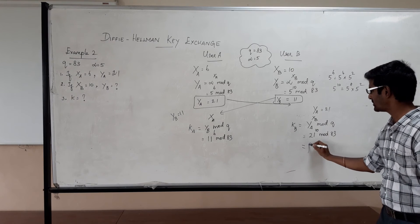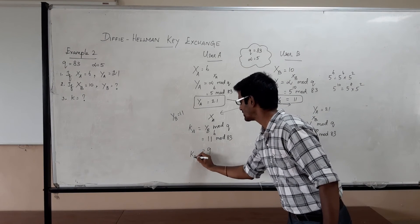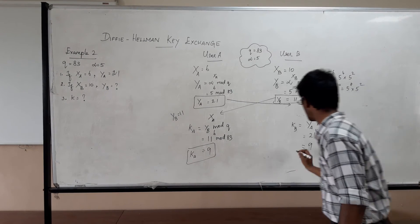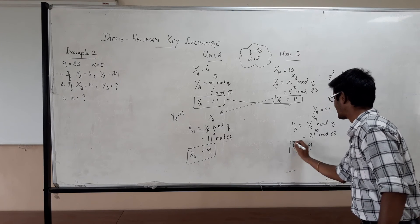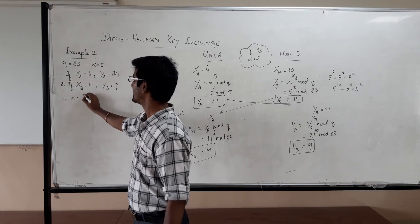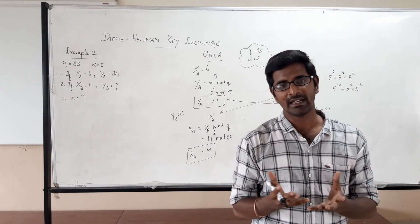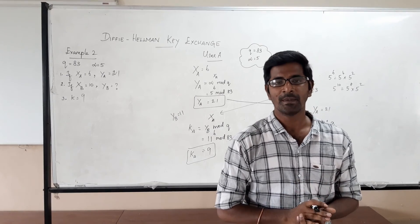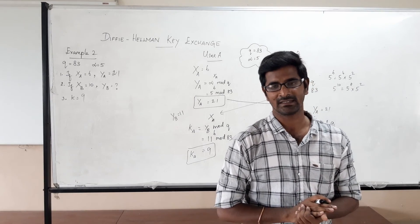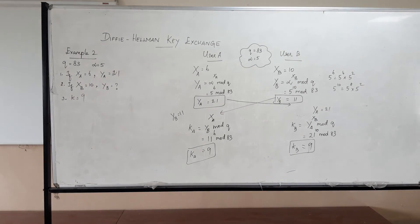If you compute at the end both will be ending up with 9. So KA is equal to 9 and KB is equal to 9. Now we have solved this. The shared secret key is 9. But remember, Diffie-Hellman key algorithm is prone to man in the middle attack. Thank you for watching.